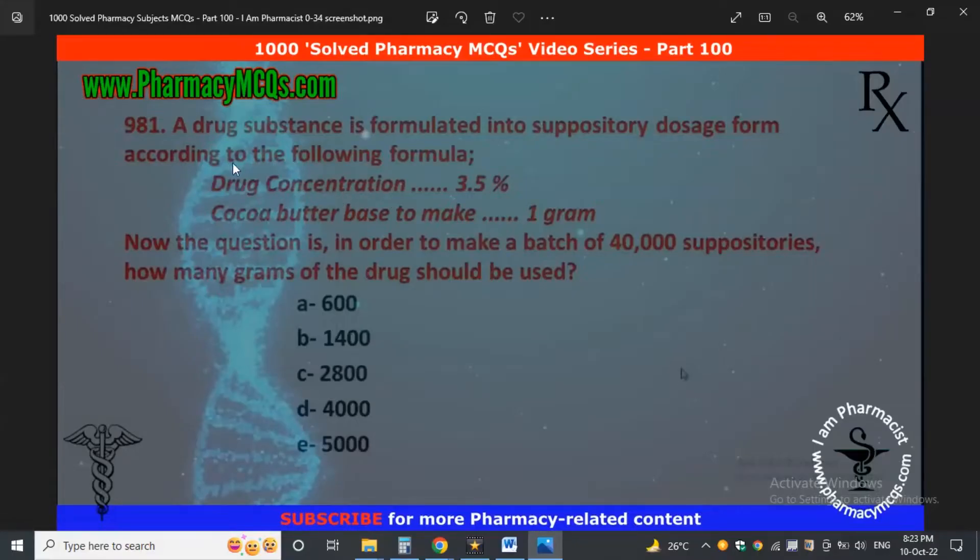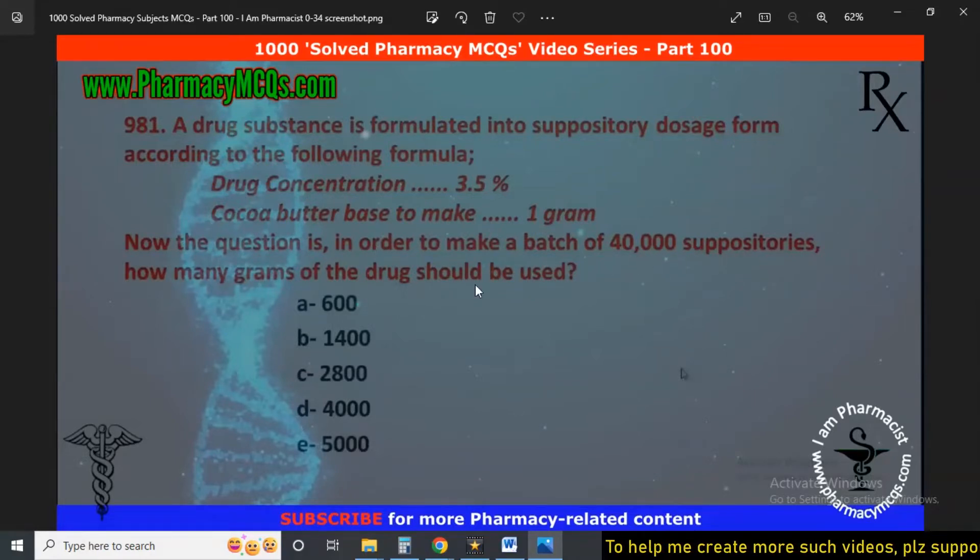Salam friends, let's solve this pharmaceutical calculation MCQ. The question is: a drug substance is formulated into suppository dosage form according to the following formula, in which drug concentration is 3.5% and base is one gram. Now the question is, in order to make a batch of 40,000 suppositories, how many grams of the drug should be used?